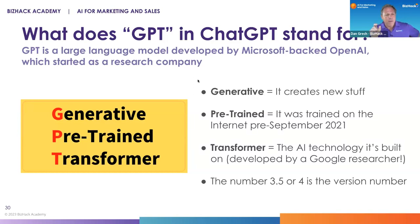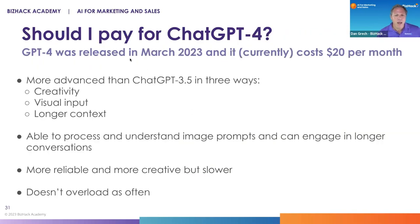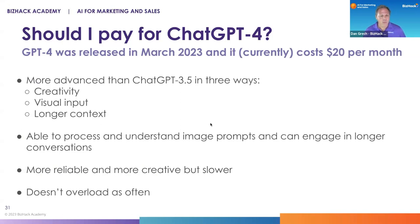When it comes to versioning, changing the decimal — like 3.5 to 3.6 — represents incremental improvements. But when you change the first number from 3 to 4, that's a big jump, and that's really what ChatGPT 4.0 is. It was released in March 2023 and currently costs $20 per month.